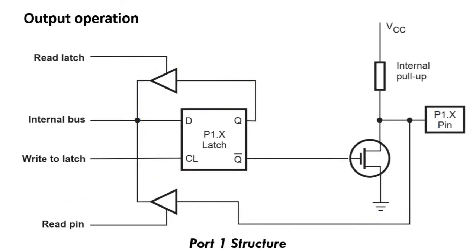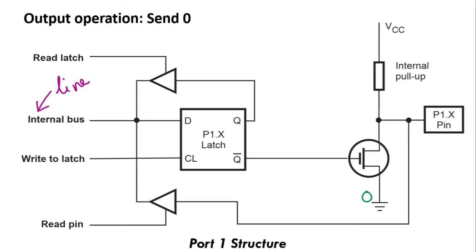Now we will understand the output operation of port 1 structure. The internal bus has a line containing 0 or 1, connected to the latch internally. When a write-to-latch signal comes — an active clock signal to the latch — whatever value is present on the internal bus is stored in the latch. To understand sending 0: the internal line is 0, which is given to the D line. With the clock, it is stored in the latch, so Q will be 0.